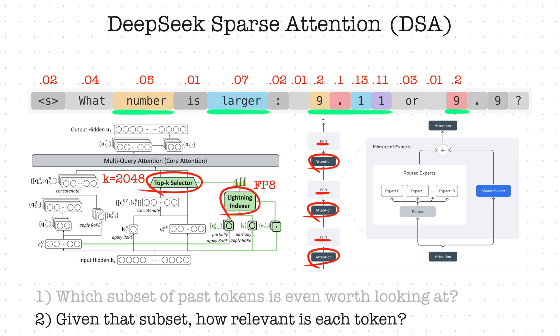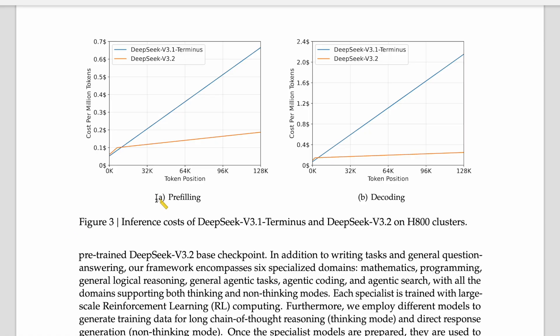So if we use a TopK selector with 2048 tokens, does it mean that any input longer than 2048 tokens takes the same amount of time? Are we basically capping the computation by that number of tokens? Well, not really, because the Lightning Indexer still touches every token in the sequence to decide which ones are important. However, once we have the subset of most important tokens, the main attention runs only on at most K tokens, independent of the total sequence length. We can see that in these two graphs in their technical report. In DeepSeek 3.1, the computation and cost scales linearly with sequence length. However, in DeepSeek 3.2, the cost scales linearly up to 2000 tokens and then gets substantially cheaper.